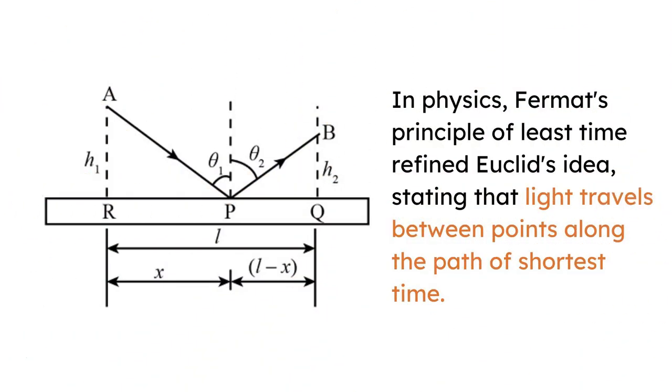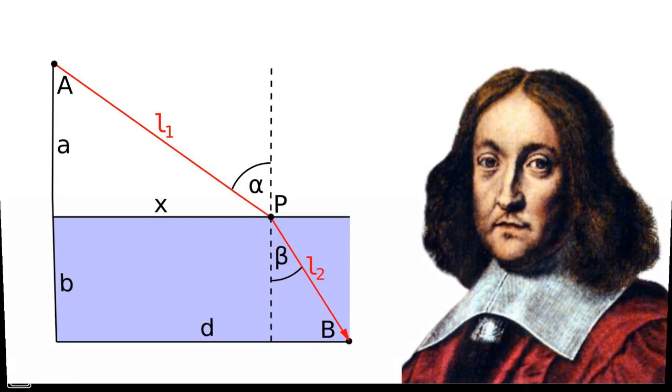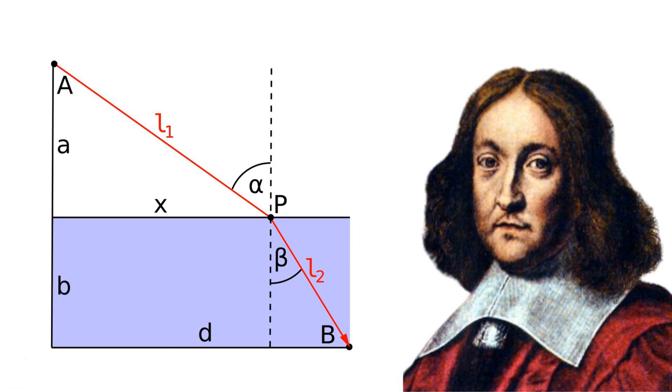In physics, Fermat's principle of least-time refined Euclid's idea, stating that light travels between points along the path of shortest time. This principle significantly influenced the historical development of the fundamental principle of least-action in physics.